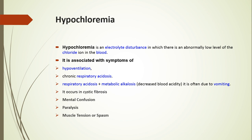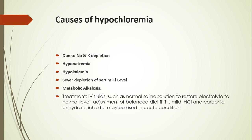Symptoms of hypochloremia include hypoventilation, respiratory acidosis and alkalosis, vomiting, cystic fibrosis, mental confusion, and paralysis. Main causes are depletion of sodium and potassium as seen in hyponatremia and hypokalemia, and severe depletion of chloride in metabolic alkalosis. Treatment is through intravenous fluids to maintain balance, adjustment of a balanced diet, and administering chloride through diet to maintain normal chloride ion levels.